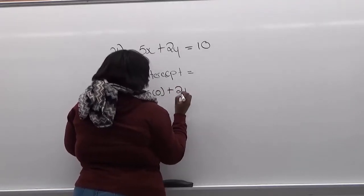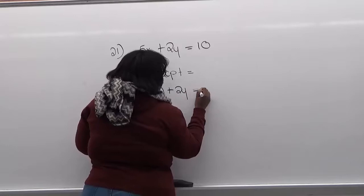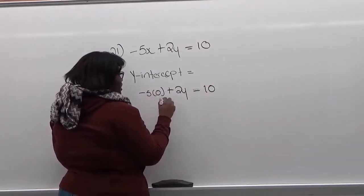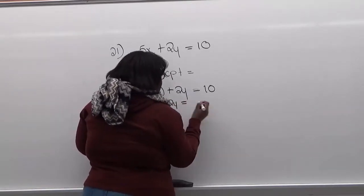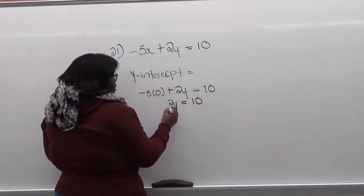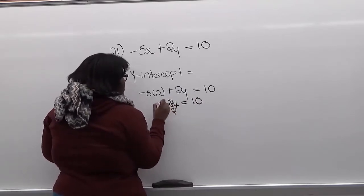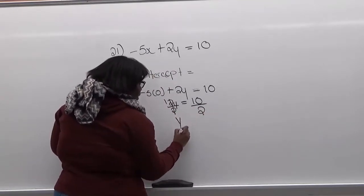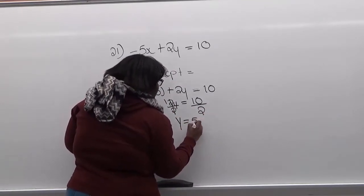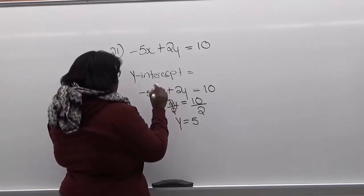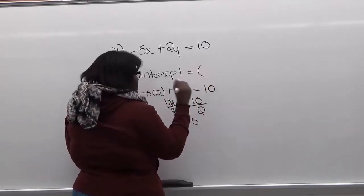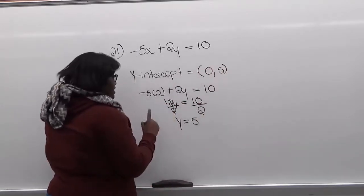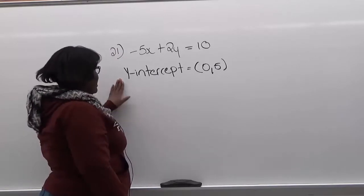So negative 5 times 0 plus 2y equals 10. Since we're multiplying a number times 0, this would just be 0. So now you're left with 2y equals 10. Divide on both sides. This becomes 1, and then 2 to the other side. So now you're left with y equals 5. So your y-intercept point is at (0, 5). So that's your y-intercept point. Okay, so now we have our y-intercept.